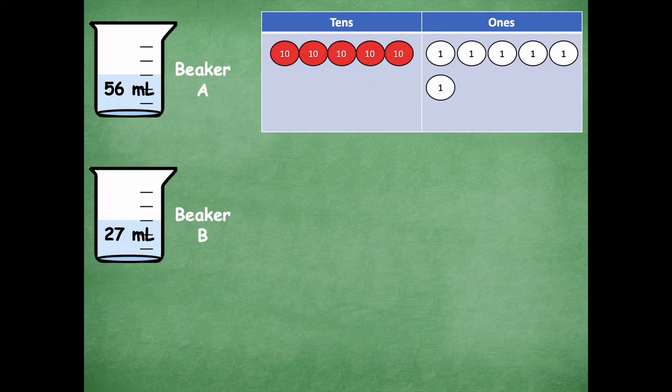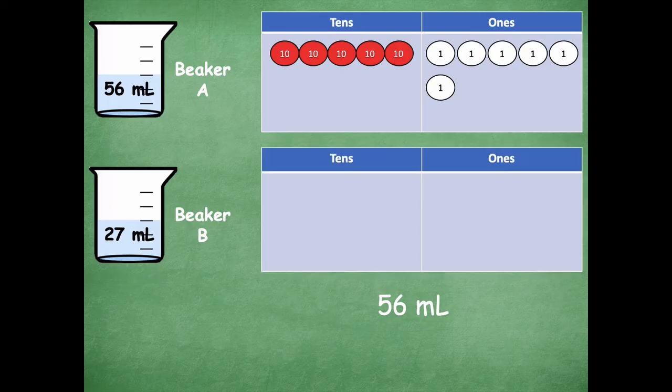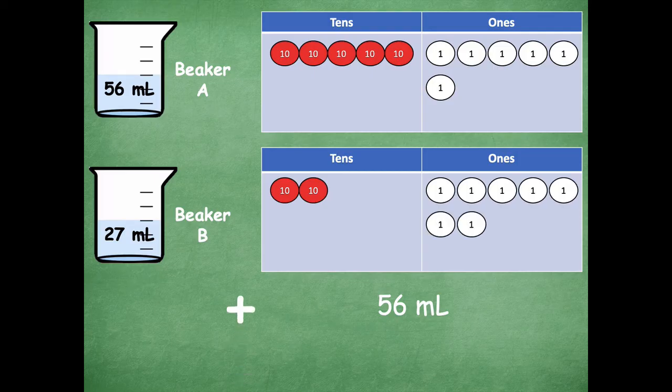Now I want to model 27. First I'm going to write 56 down below because we're going to use this standard algorithm to solve this also. So here's my place value chart. I have two tens and I have seven ones. So now I'm going to bring down my 27.